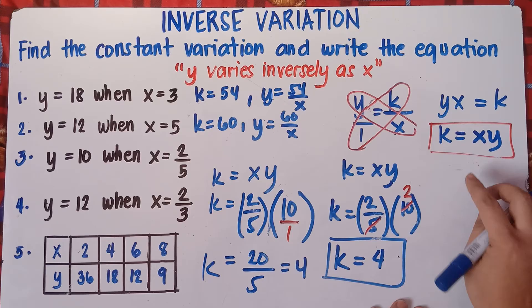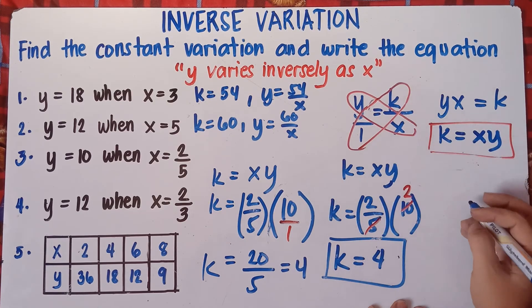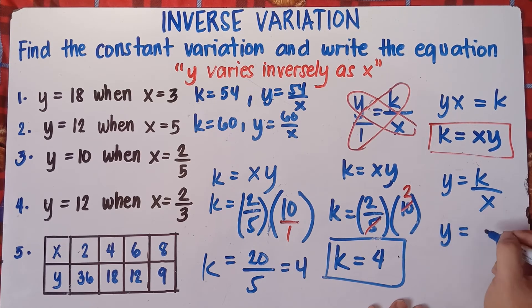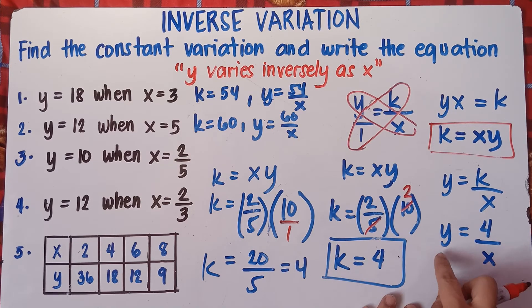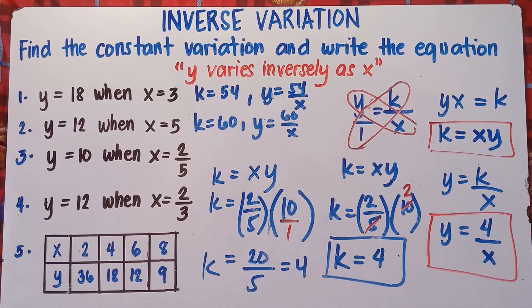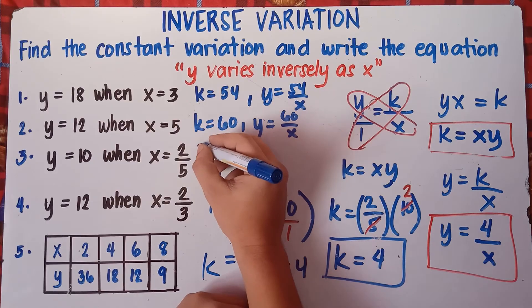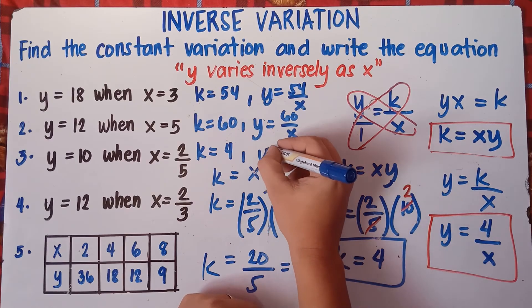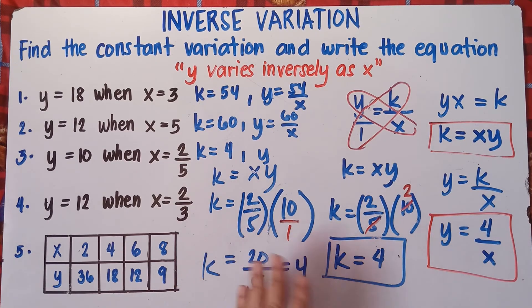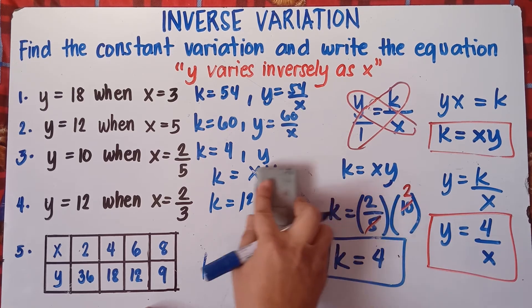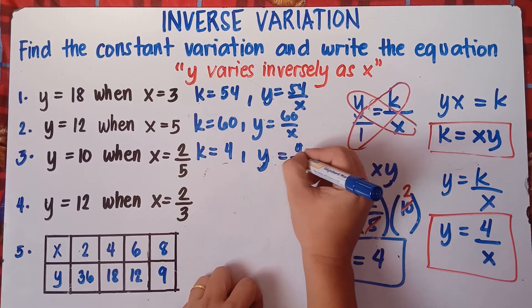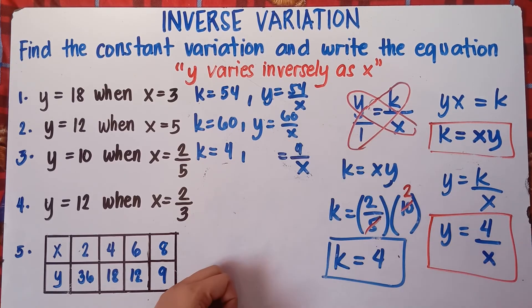So our k is 4. Then write the equation: y equals k over x — with k equals 4, that gives y equals 4 over x. That's the answer for number 3.